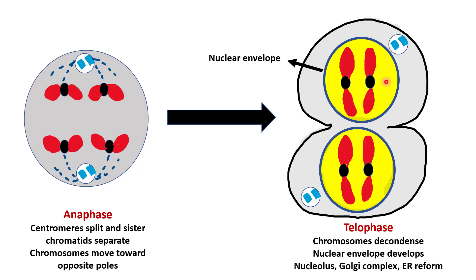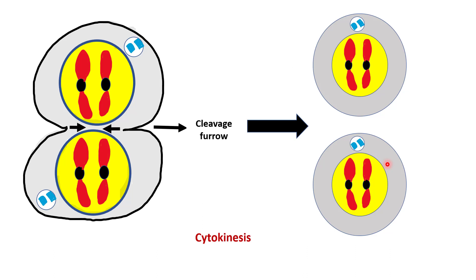Nuclear division is now completed and we can see two nuclei in the same cytoplasm. During cytokinesis, a cleavage furrow appears in the plasma membrane. The furrow gradually deepens and ultimately joins in the center, dividing the cell cytoplasm into two.